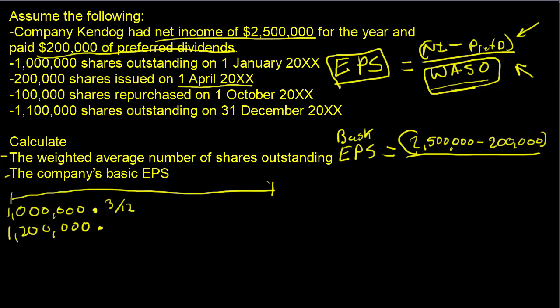The 1.2 million shares were outstanding from April through October — April, May, June, July, August, and September — before the next event on October 1st. That's six out of 12 months, so six-twelfths is how long we had 1.2 million shares outstanding.